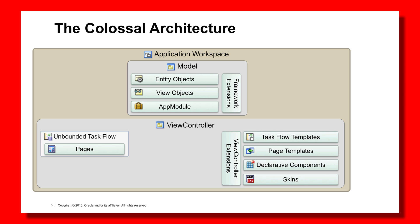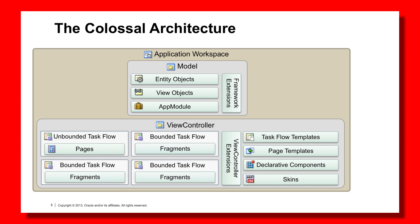Talking about bounded task flows: your application will be made up of one to many bounded task flows, potentially based on pages but more likely based on page fragments, because these are more reusable in the sense that they can be embedded in a page — whereas a page can't be embedded in another page. The number of bounded task flows really depends on your requirements and design, but the Colossal Pattern differs from the Small and Simple pattern precisely by introducing bounded task flows and a lot more functionality.